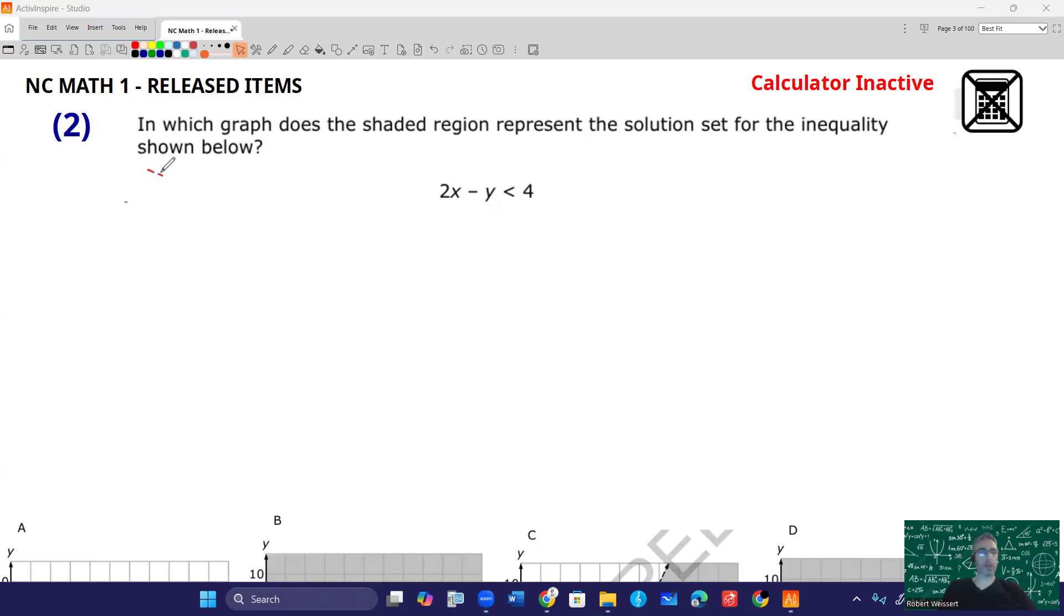So first thing we're going to do is we're going to rewrite this. So I'm going to say 2x minus y is less than 4. Now we want to get it solved for y. So we're going to go ahead and subtract the 2x from both sides. That's going to give you 4 minus 2x on the right side. The left side is going to be negative y is less than 4 minus 2x. From there, we want to get the y by itself. So we're going to have to divide by negative 1.